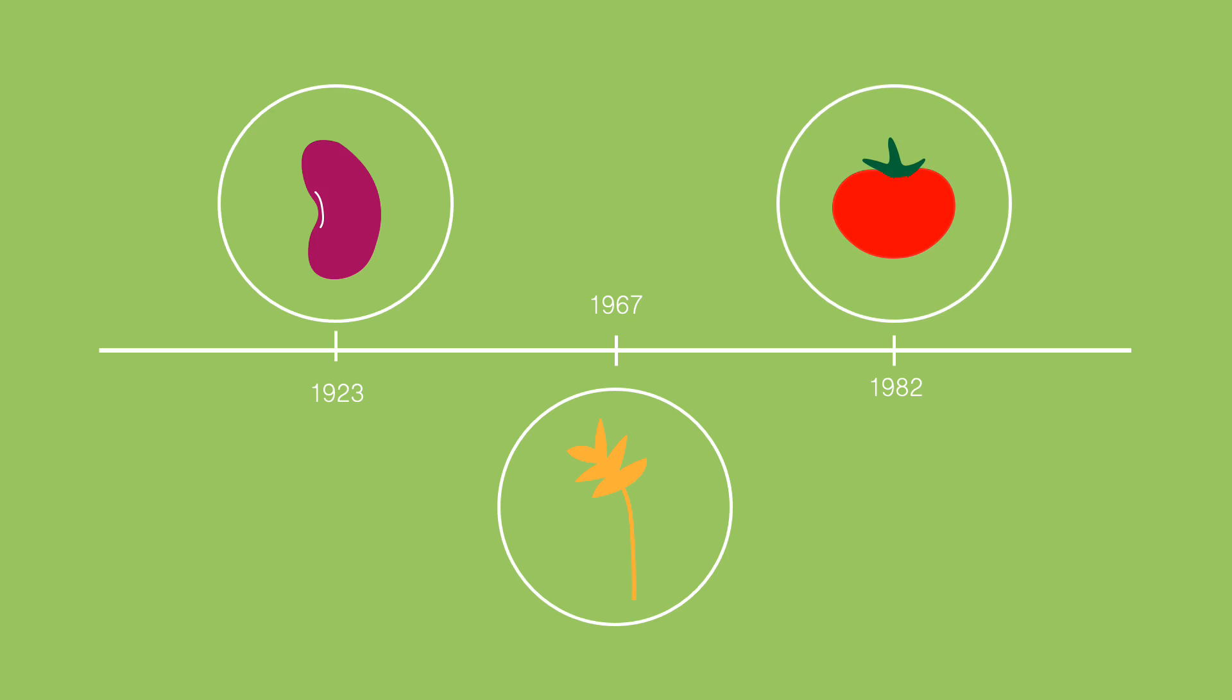In 1982, Tanksley, Medina, Philo, and Rick used isozyme loci to locate factors influencing stigma length, fruit weight, and seed weight in tomatoes.